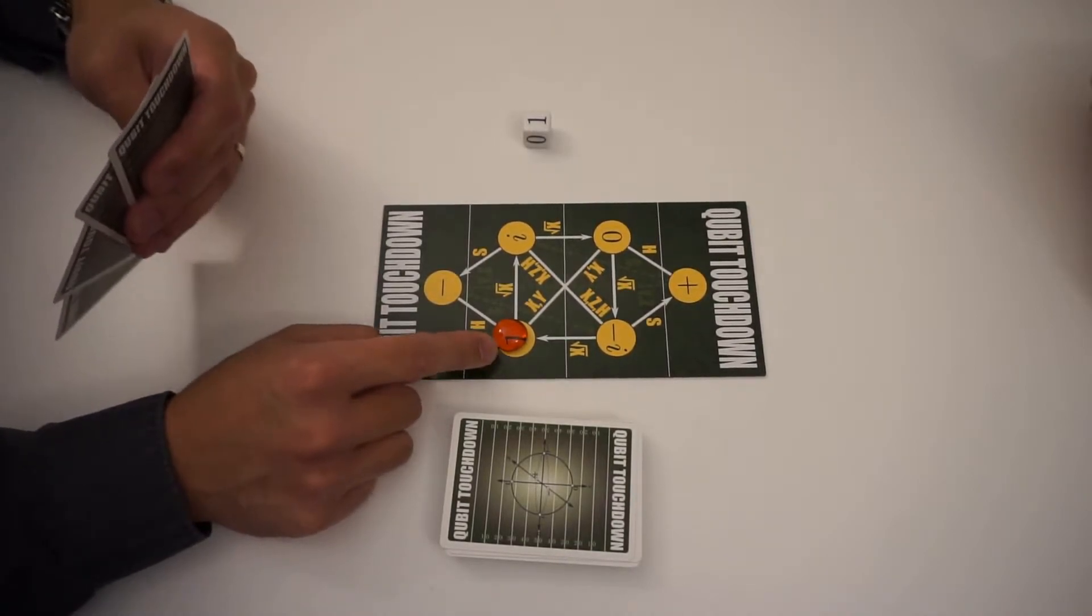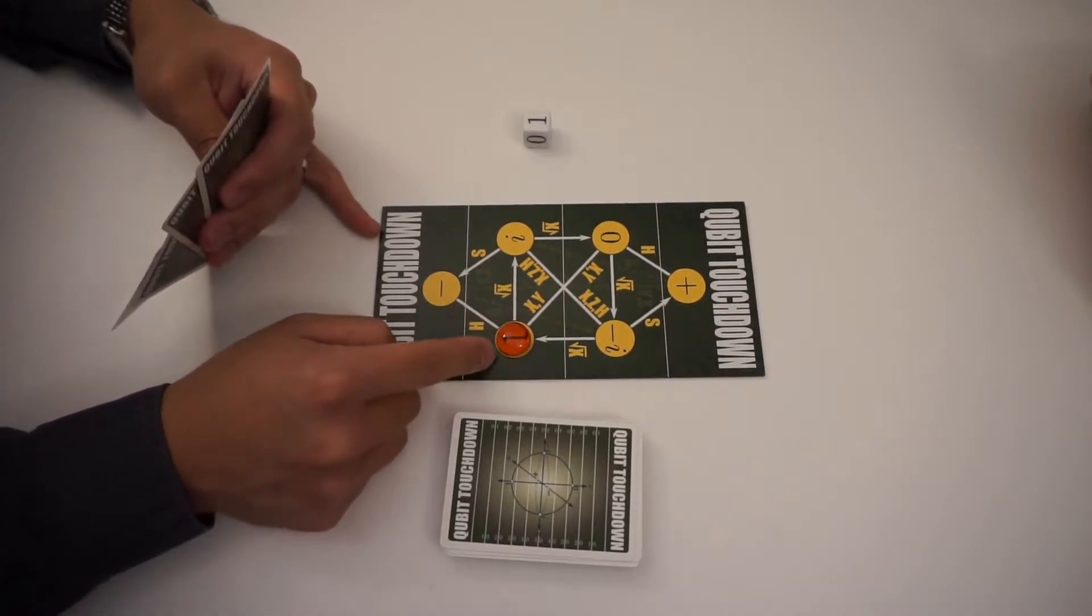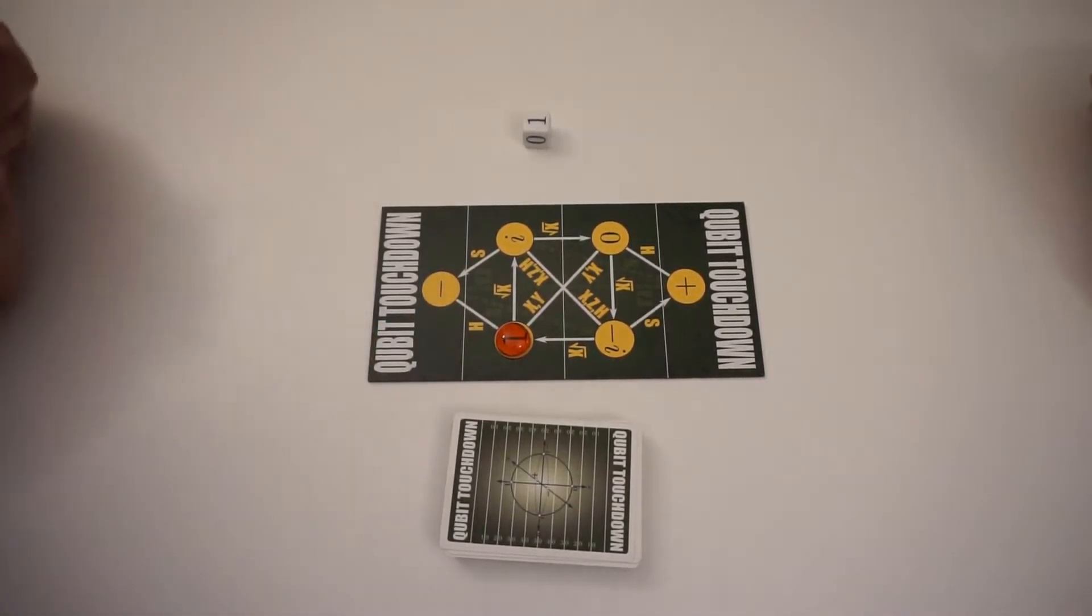So for example, if my opponent were to play an S card, you see that there's no S transition from this location, so nothing would happen. The football would stay put.